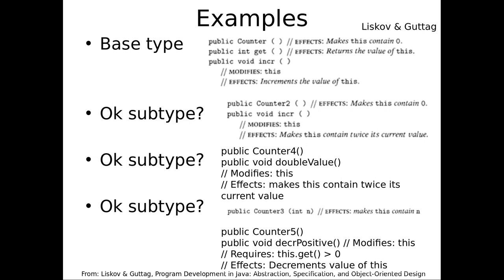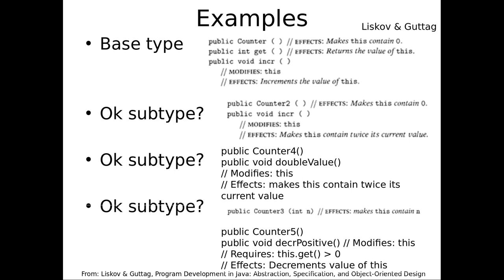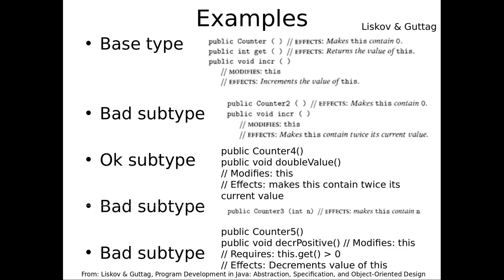But is Counter 5 a legitimate subtype of Counter? It violates the history property — the value should never decrease. Could someone be writing code with Counter that counts on it only staying the same or increasing? Yes — you have a loop, you're keeping track of it to refer to an index in some array, and it's never overriding earlier elements because its value is either staying the same or rising. Counter 5 will violate that. Someone whose code knows only about counters could be counting on the fact that it never decreases, and their code could develop a bug.